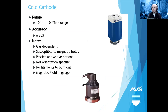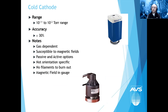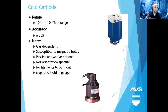Cold cathodes: 10⁻² to 10⁻¹¹. Active versions may keep you at 10⁻⁹; passive gets into the 10⁻¹¹ range. No filaments to burn out, which is a nice advantage. There are internal magnets, so if you have magnetic fields in your process, that's a consideration, though shielding these days largely handles that. Earlier cold cathodes were essentially very expensive paperclip collectors — you could literally pick up paperclips with them — but modern designs have resolved that issue.